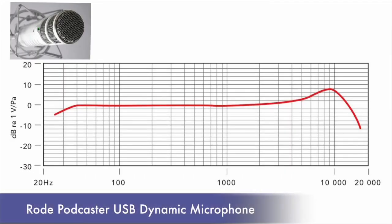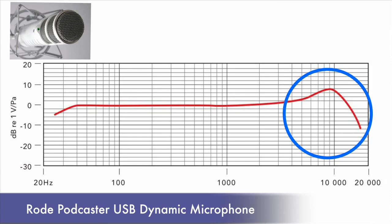Typically, a dynamic mic will pick up less background noise because they're less sensitive. For example, when you look at the frequency response chart of the Rode Podcaster, you can see how it rolls off at the high end. Why can't you just remove the background noise from the audio? Well, some of those frequencies may also be a part of the voice. So when you remove them, the voice can sound hollow or metallic.